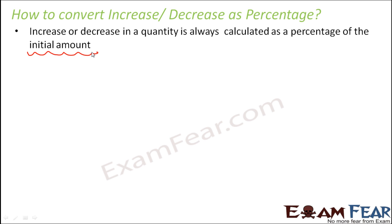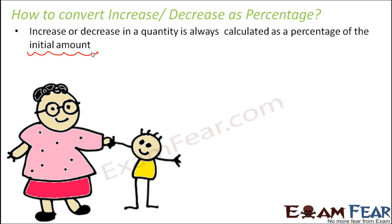Similarly, when your height increases by 20 percent, if the initial height was H, then this increase of 20 percent has happened on the initial height. Therefore, whenever we talk about increase or decrease in a quantity, it has to be calculated as a percentage of the initial amount, because the increase or decrease is happening on that initial amount.